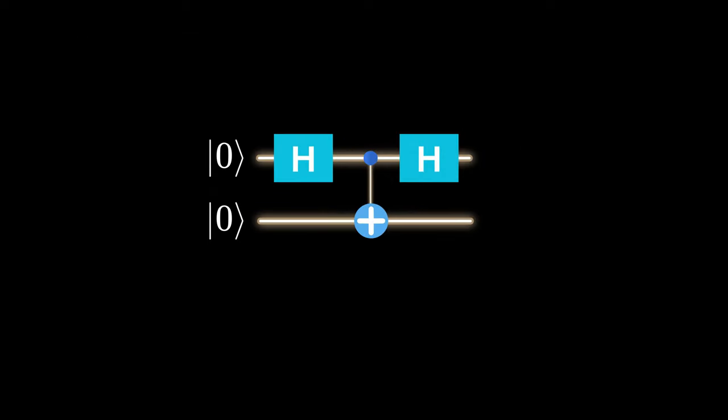Imagine adding another Hadamard gate into our quantum mix right after our CNOT gate. This adds another layer of complexity to our quantum circuit. What mysteries will this new addition unveil? Will it undo the entanglement?